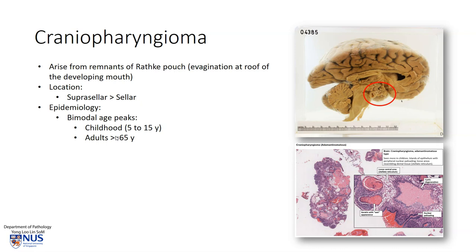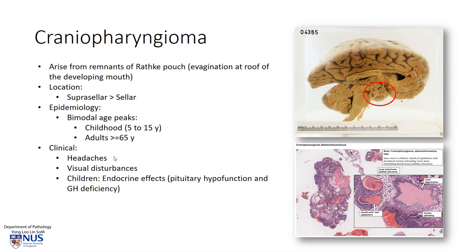In terms of epidemiology, it has two age peaks. One is actually quite young in life, in childhood, and the other is in older adults around 65 years or older. Clinically, patients may complain of headaches or visual disturbances, which is not surprising because of their proximity to the optic chiasm. And very importantly in children, they can give rise to pituitary hypofunction and therefore growth hormone deficiency, and we can also have endocrine effects even though this is not directly invading or involving the pituitary gland.